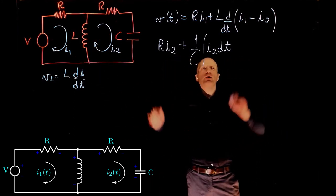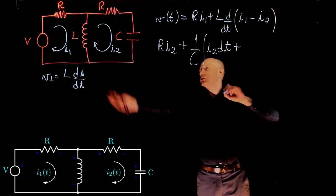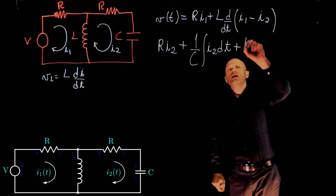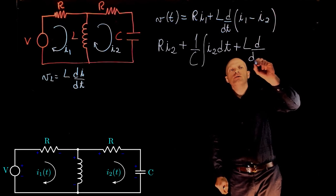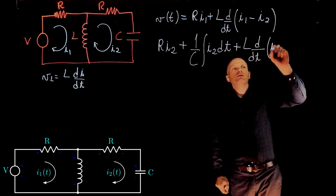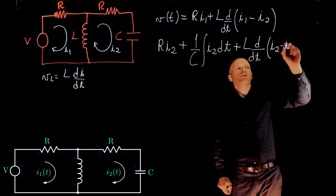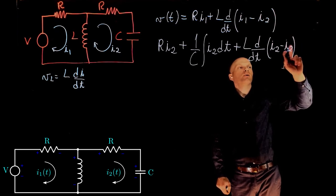So the voltage drop across the inductor in the second loop now is L times the derivative of I2 minus I1. And this equals to 0.